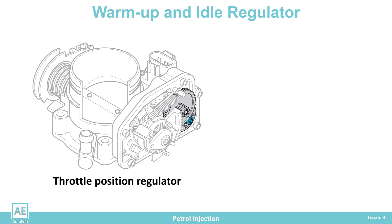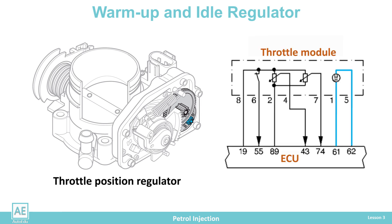The throttle position regulator is an electric motor that further regulates engine idle speed by pushing the throttle through the reduction gear. If a malfunction occurs in the regulator part, the spring mechanically sets the regulator in the zero position. The failure of the regulator is stored and the ECU can recognize two different states.